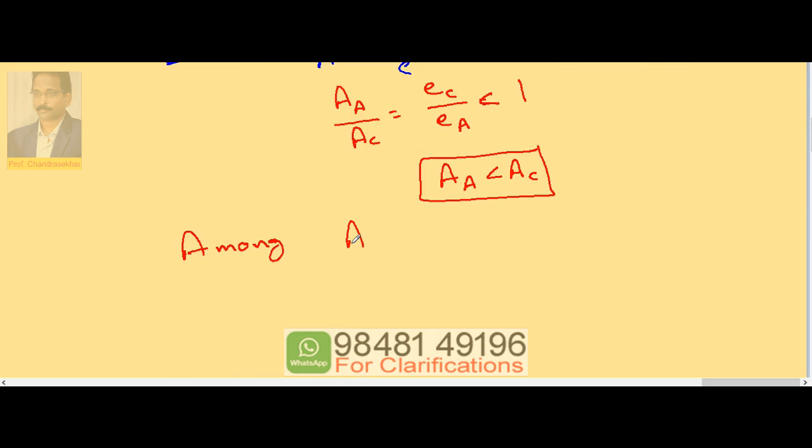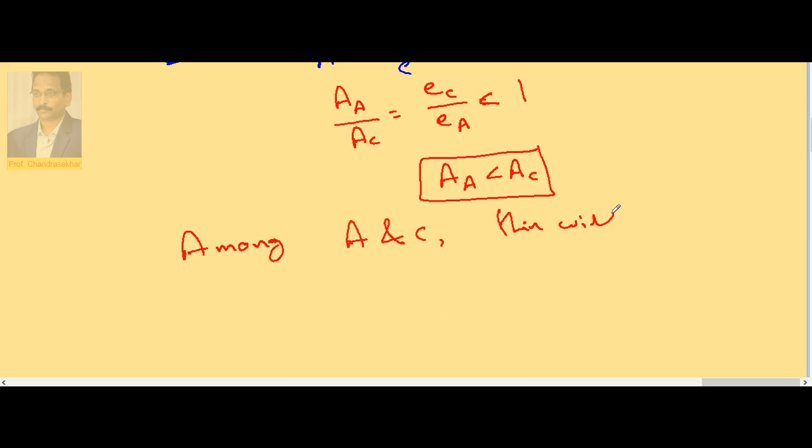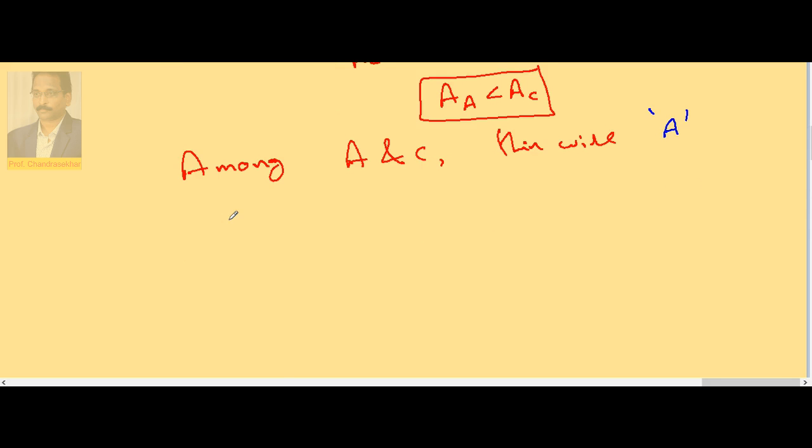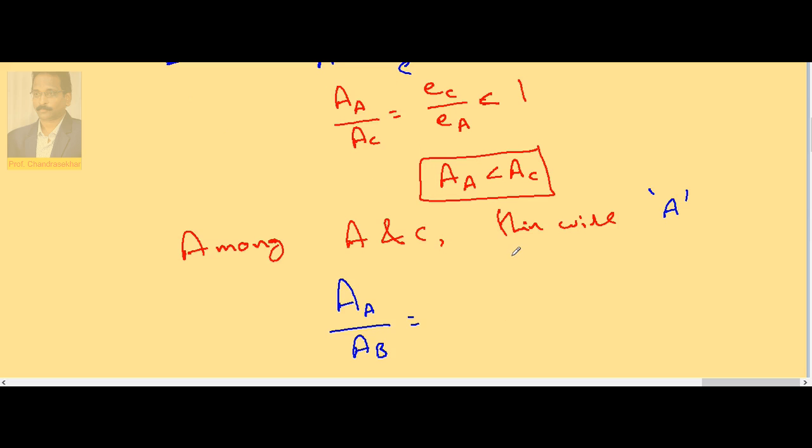So among A and C thin wire is A. Now let us take A and B. Area of A by area of B is equal to length of A by length of B and elongation of B by elongation of A.